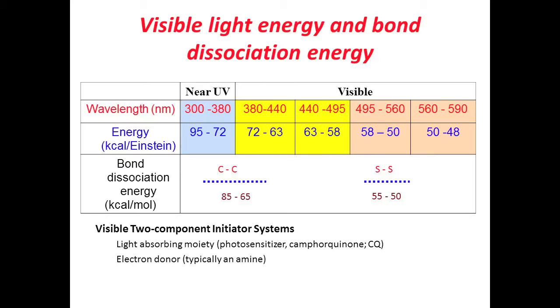They're all part of a one-component composite package, but there are two different components to the initiator system within that, typically camphorquinone and an amine. This allows the activated state of the camphorquinone to interact with the amine, and what ends up happening is a cleavage of the carbon-hydrogen bond within the amine to give the initiating radical. These longer wavelengths have some benefit over UV in that they have greater penetration potential, meaning greater depth-of-cure potential.